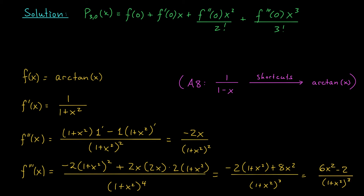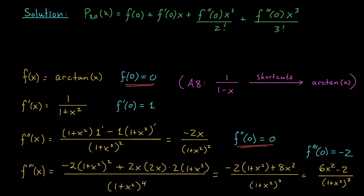Now I plug x equals 0 into each derivative to build the polynomial. f of 0 is 0, f prime of 0 is 1, f double prime of 0 is 0, and f triple prime of 0 is minus 2. Since f of 0 and f double prime of 0 are both 0, those terms drop out. All that remains is x minus 2x cubed over 6, which simplifies to x minus x cubed over 3. That is our third degree Maclaurin polynomial.